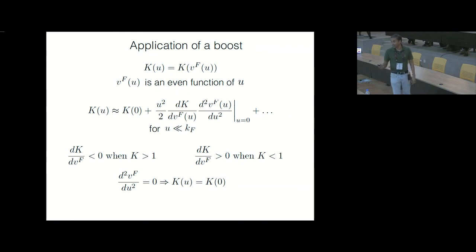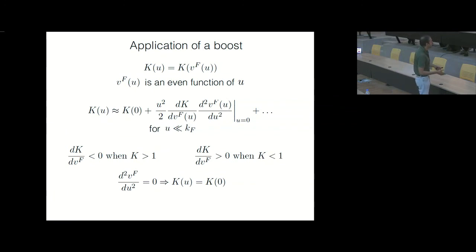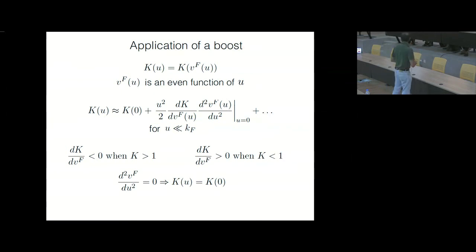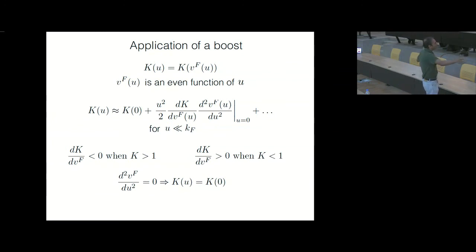The second derivative is very important — if it equals zero, the boost has no effect on the Luttinger parameter. And in fact, this is exactly equal to zero if your dispersion was p²/2m to begin with — if you had a parabolic dispersion, then the second derivative is zero and the boost has no effect, which is consistent with the expectation: there is no way in which you're breaking Galilean invariance in the system, and applying a boost does nothing. In fact, it does nothing.